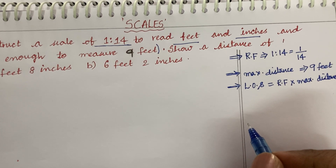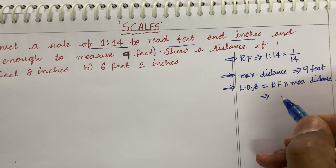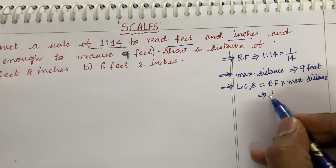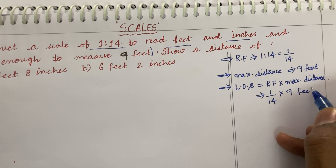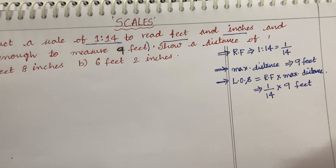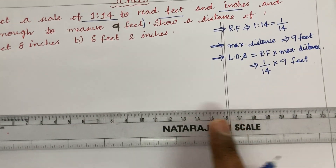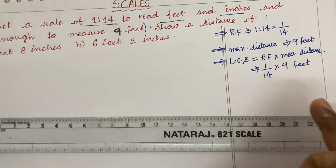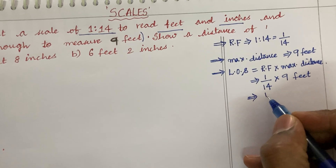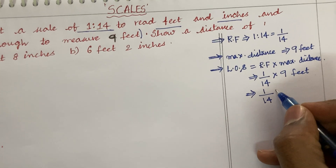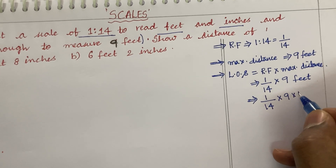I hope you are waiting to know which type of scale this belongs to — I am going to reveal that. RF is given as 1 upon 14, and the maximum distance is 9 feet. But on the drawing sheet, I need to work in centimeters or millimeters. That's the reason I am going to convert 9 feet into inches first. As we all know, 1 foot equals 12 inches.